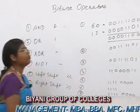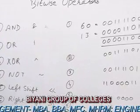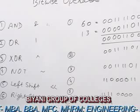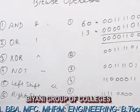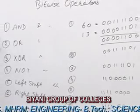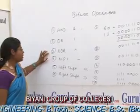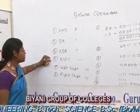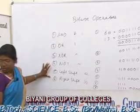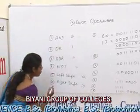Let's see what happens in bitwise operators. Bitwise operators are those operators which operate on the individual bits of integers. They are of seven types: first is AND, second is OR, third is XOR, fourth is NOT, fifth is left shift, sixth is right shift, and seventh is right shift with zero fill.